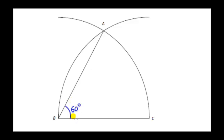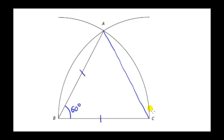So why is this angle 60 degrees? By construction, the distance from B to A equals the distance from B to C, because they are both radii of the first circular arc. Also by construction, the distance from C to B equals the distance from C to A, because those two lines are both radii of the second circular arc.